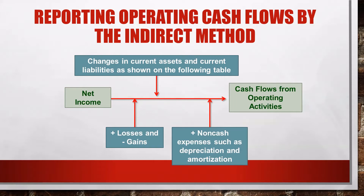Remember that depreciation and amortization expenses reduce net income. Since these items are not cash items, they should not be included in the statement of cash flows. Gains and losses are other items on the income statement to consider — they result from the sale of an asset. Gains are added and losses are subtracted on the income statement to arrive at net income. Since gains and losses don't represent operating cash flows, gains are cancelled out by subtracting and losses are cancelled out by adding to net income in the operating section.